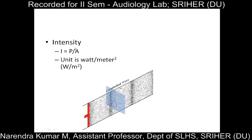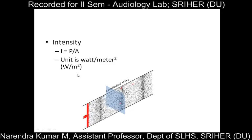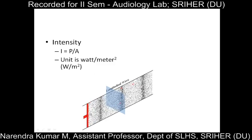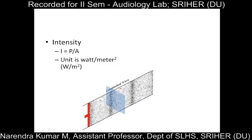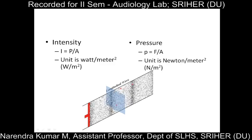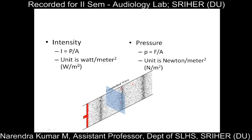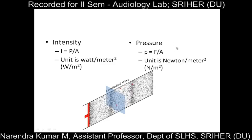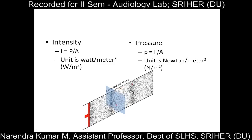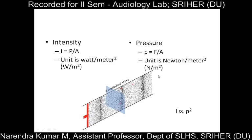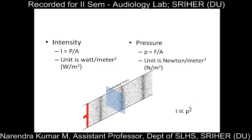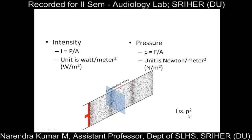Once the sound is generated, it is transmitted as changes in sound pressure — condensation and rarefaction. Pressure is defined as force per unit area. Power per unit area is intensity, whereas force per unit area is pressure. There is a relationship between intensity and pressure: intensity is directly proportional to the square of pressure. This has to be noted.